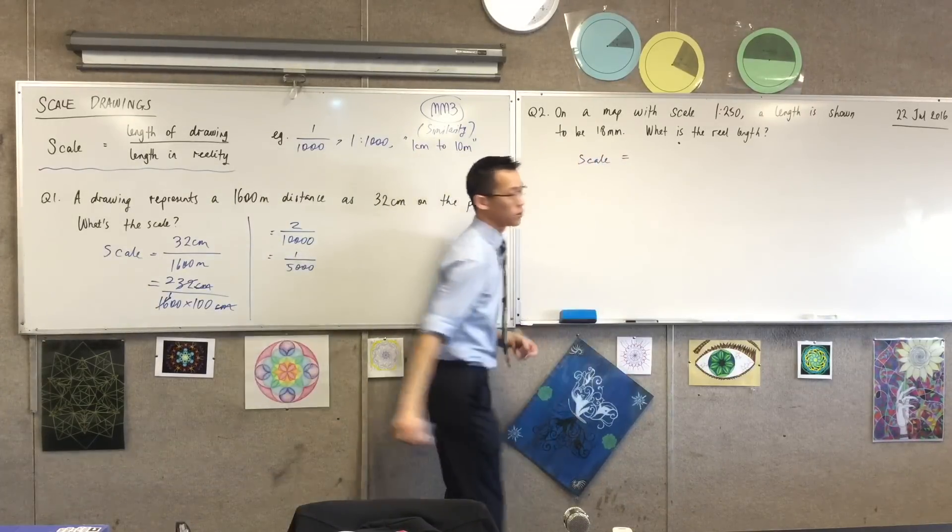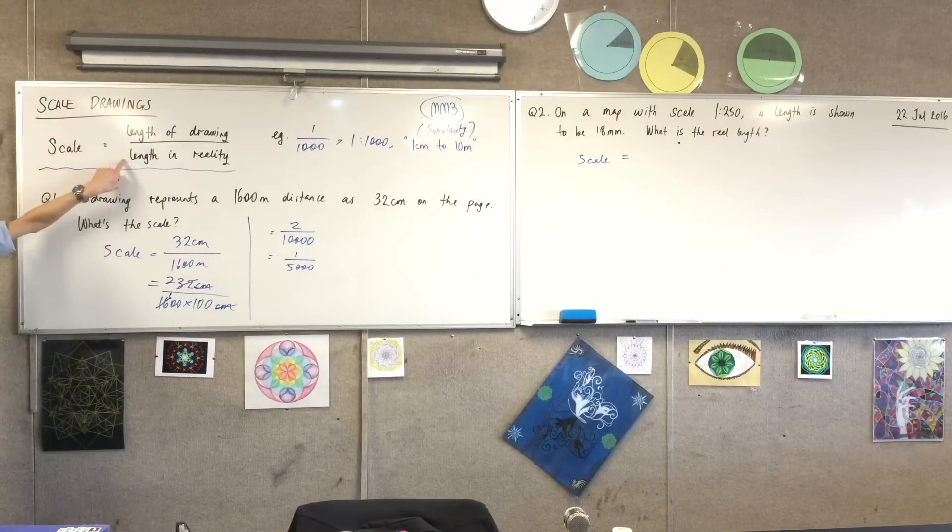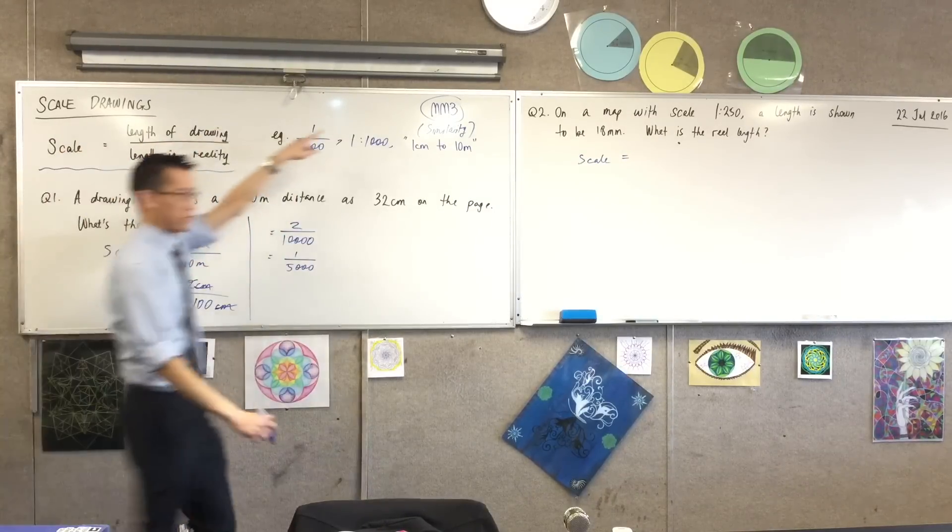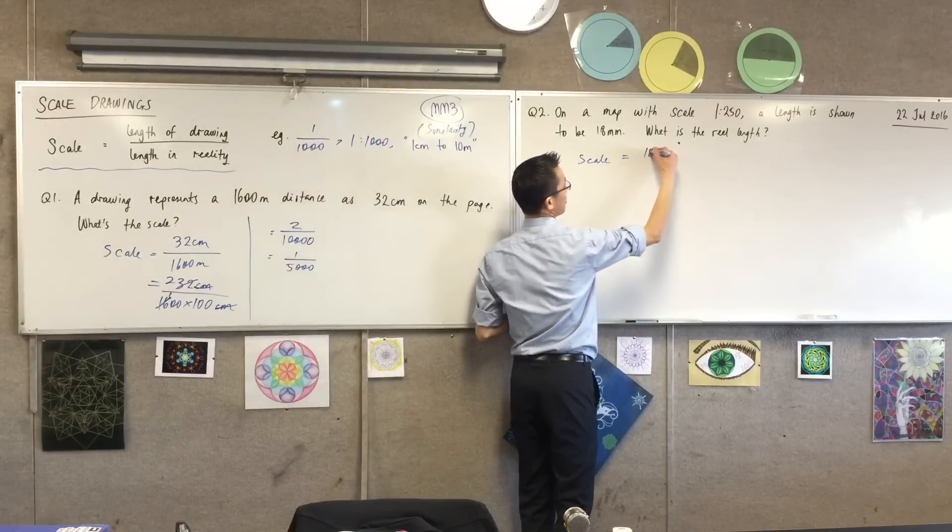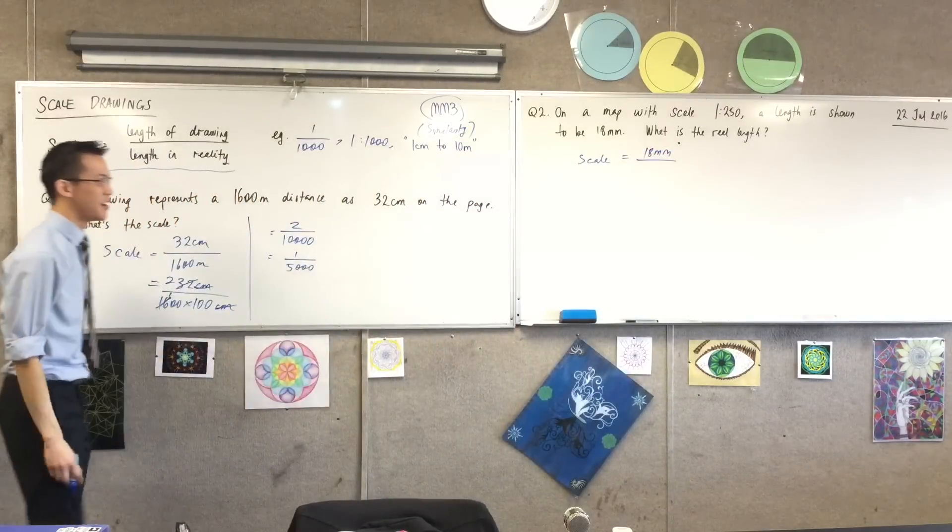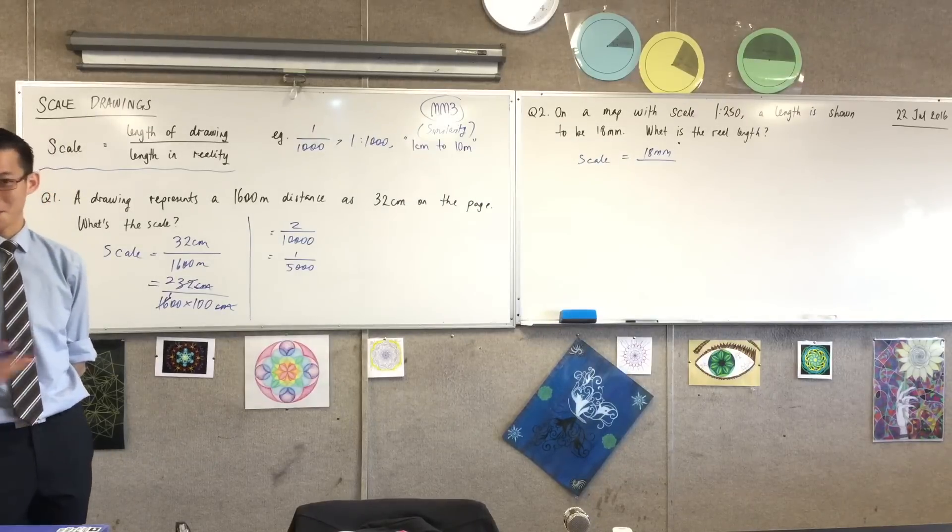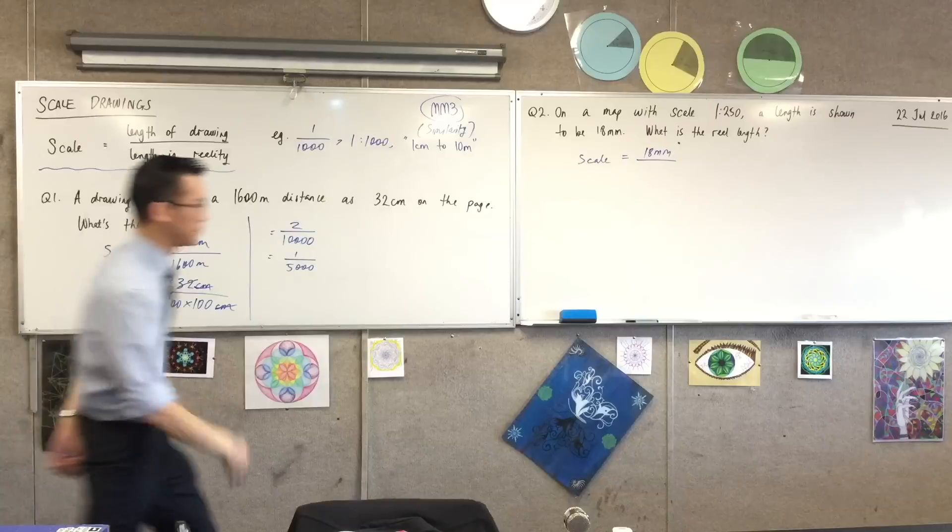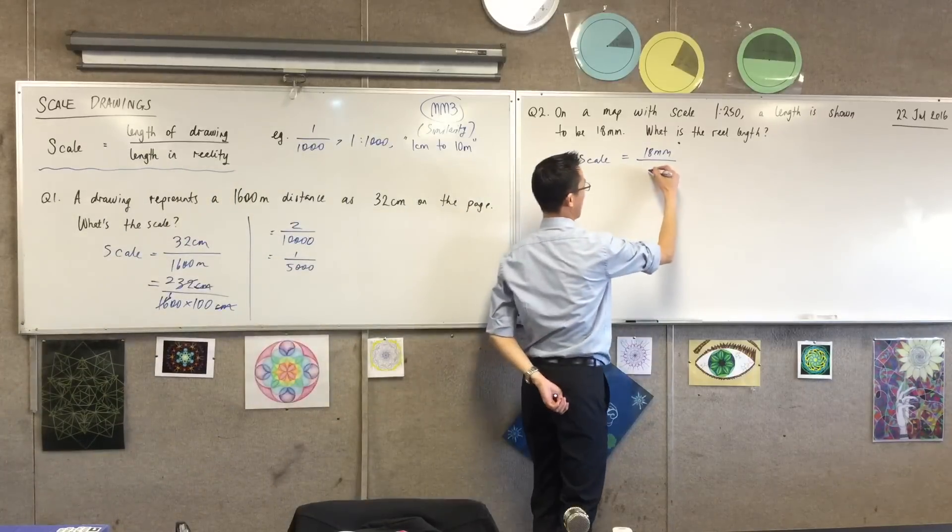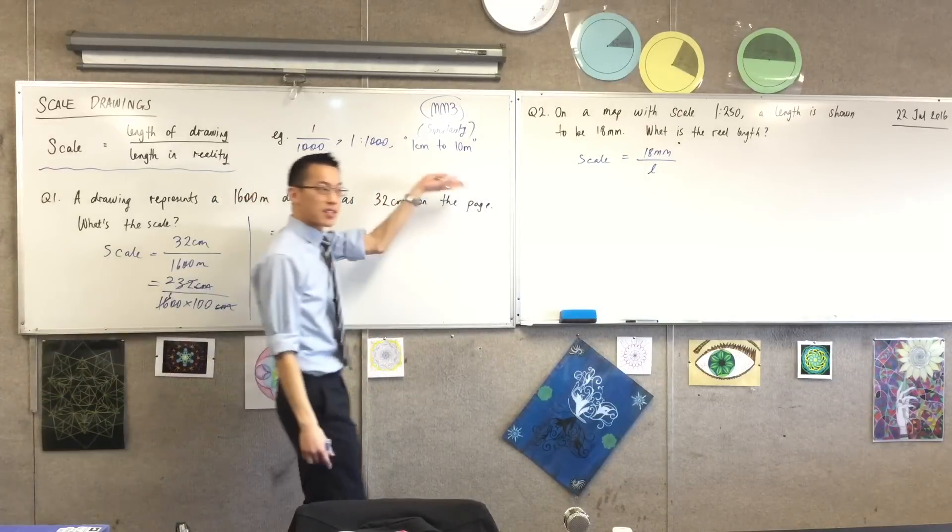So I'm going to start just the same way I did before, with the scale and these two things here, with a slight difference. When I write this, scale equals, I have short length on the top, long length on the bottom. I know that the short length is, it's 18 millimeters, but I don't know what the heck the reality is. So thankfully, I have a whole range of mathematics devoted to it. I don't know what the number is. It's called algebra. So I'm just going to give it a name. I'll just call it L for length.